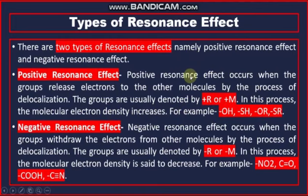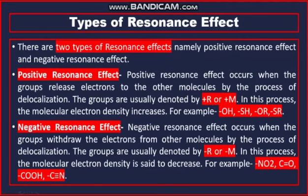Aise groups, jab kisi molecule ke saath lag jayen aur us ke saath bond bana le, to us waqt woh usay electron dena shuru kar dete hain, jis ki wajah se us particular molecule ki electron density badh jaati hai. Aur uski reactivity badh jaati hai — molecule zyada reactive ho jaata hai. Is tarah ke groups ko hum plus R aur plus M se show karte hain. Inhe electron donating groups bhi kaha jaata hai.